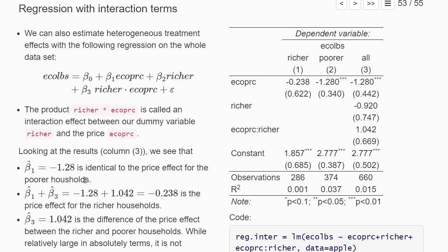So this -1.28 plus 1.042, we find minus 0.238. And that's exactly the coefficient we had in our separate regression just for the richer subgroup. So beta one plus beta three is just the same effect than if we would only look at the subgroup of richer households. Or in other terms, this beta three coefficient of 1.042 is just the difference between the effect we measured for the poorer household and the one we estimated for the richer household.